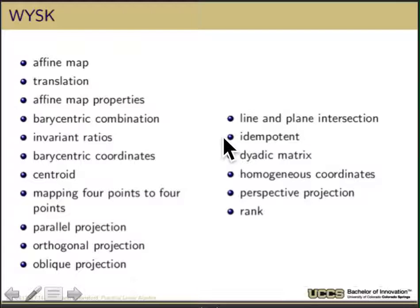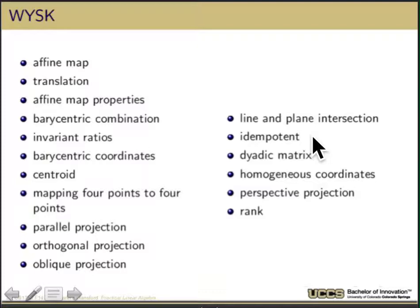A bunch of words you need to make sure you understand: affine map, translation, barycentric combinations, barycentric coordinates, invariant ratios, centroid, mapping of four points, parallel, orthogonal, oblique, and perspective projection terms. Go to the end of chapter 10 and go through the practice problems. Also note that rank shows up for perspective projections — you're now in 4D, but rank 3 has perspective projection implications.